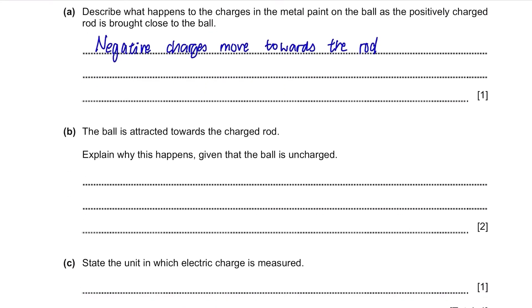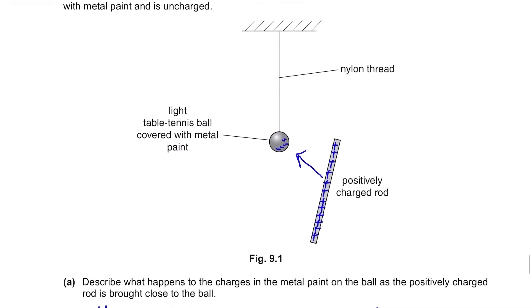Part B. The ball is attracted towards the charged rod. Explain why this happens given that the ball is uncharged. When we say the ball is uncharged, you need to remember that there are still both positive and negative charges present. So they're asking why the ball is attracted even though there are positive charges on the ball which may push the rod away.